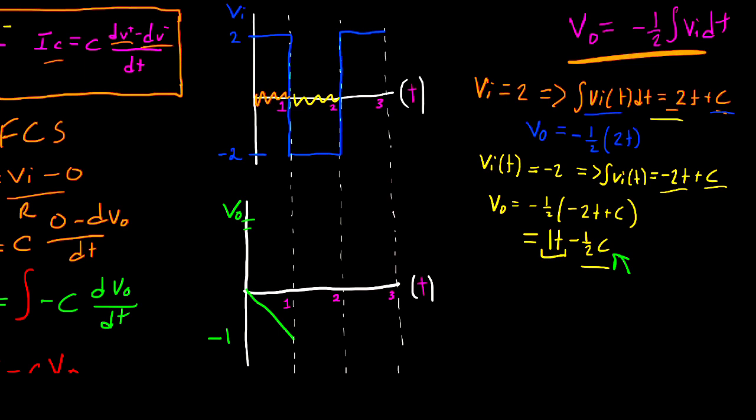But instead of calculating specifically what negative 1 over 2C is, instead what I'm going to do is say my graph continues from the point you left off and I'm just going to focus on the slope of 1T. So slope of 1T is going to bring me back from negative 1 back to 0 at 2.